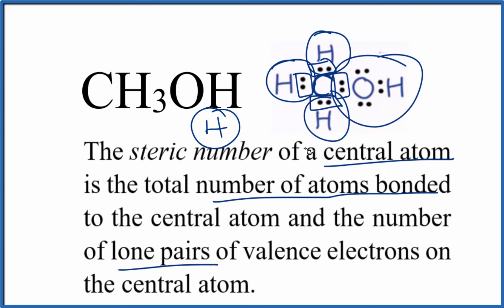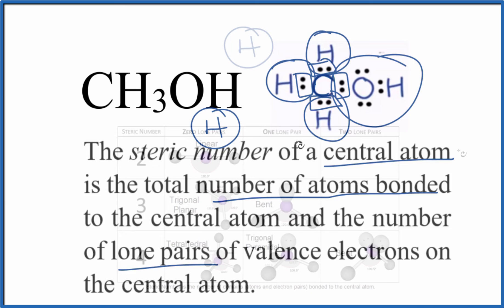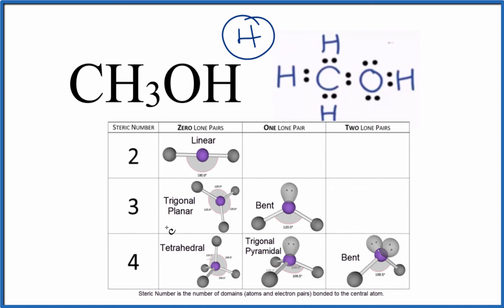And you can use that to figure the molecular geometry out for CH3OH, like this. We know our steric number is four, and we know that there aren't any lone pairs. All these electrons here, they're involved in chemical bonds. Zero lone pairs, steric number of four. We have this tetrahedral molecular geometry.